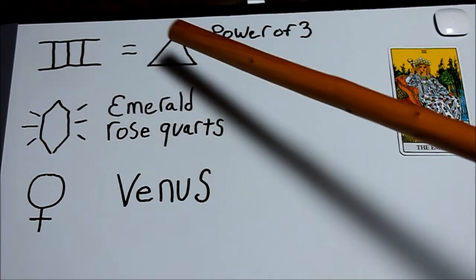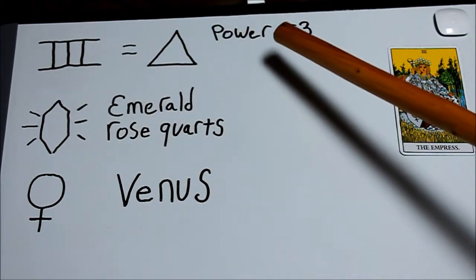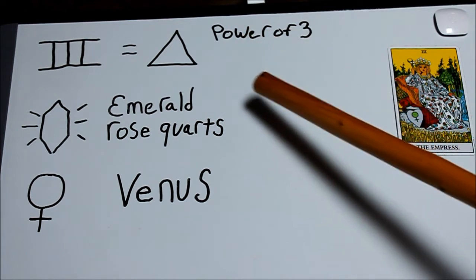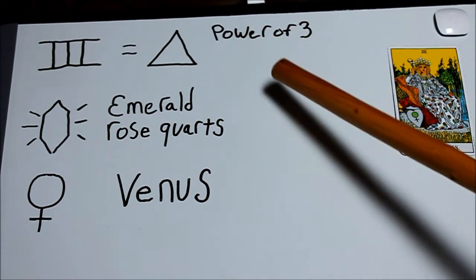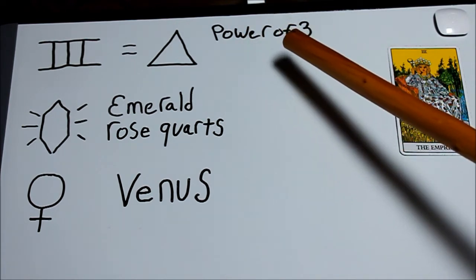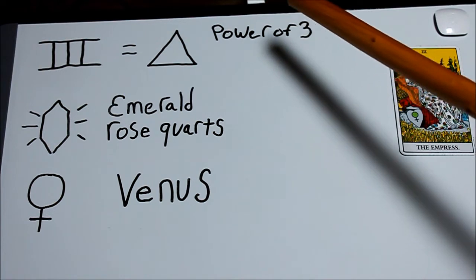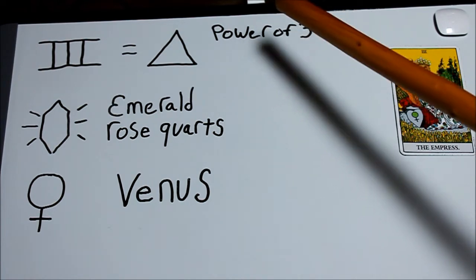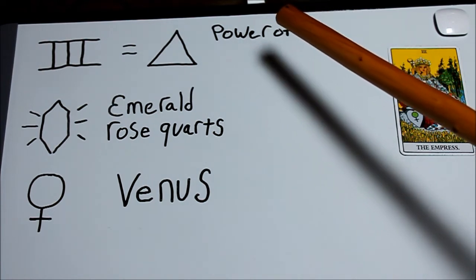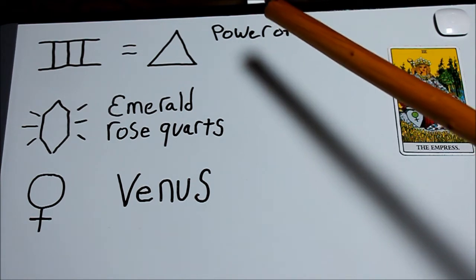All throughout time in every culture they understood the power of three. Pythagoras said that three is the only real number - the ones that came before them were only essences. The Taoists said that one engenders two, and two engenders three, and three engenders all things.